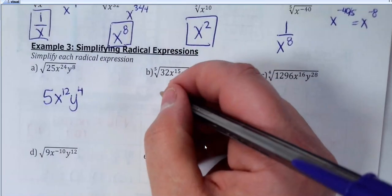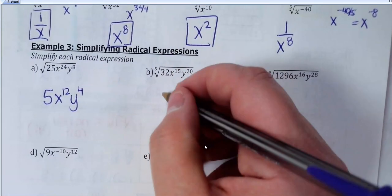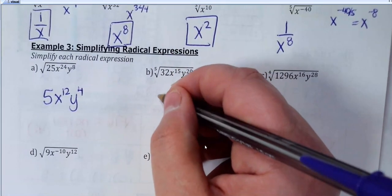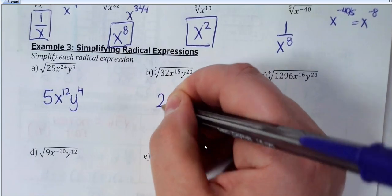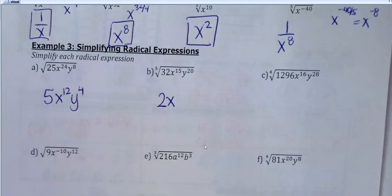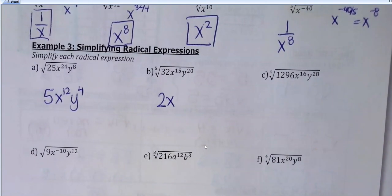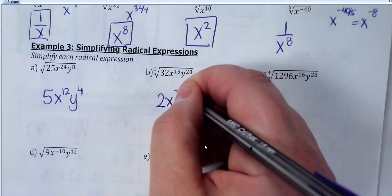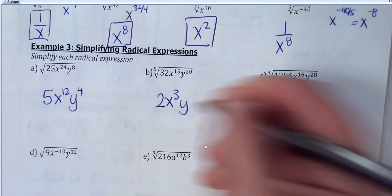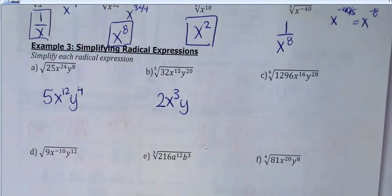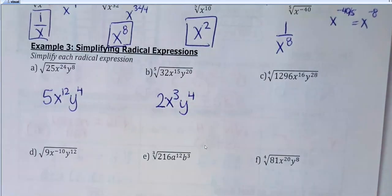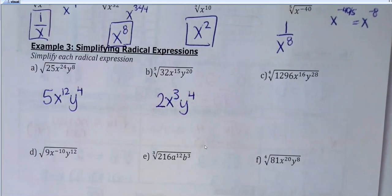Fifth root of 32 is 2. I've got x to the 15th and y to the 20th — this is a fifth root. The exponent on x would be 15 divided by 5, which is 3. The y exponent would be 20 divided by 5, which is 4. Done — nothing else to do there because the letters are different variables, so you're not going to multiply like bases.